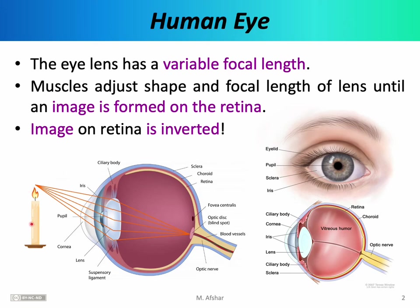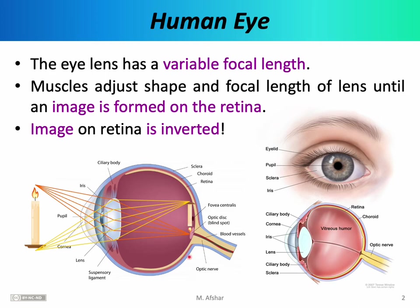The same thing is happening with every point on the candle. Light rays emanating from the bottom of the candle can also pass through the lens of the eye, also refract, and end up being focused at a single point on the retina. As this process happens with every point along the length of the candle, we end up with an image of the candle on the retina. Notice that the image is actually upside down — this is quite normal. Your brain has essentially learned to interpret this and sees the world upright.